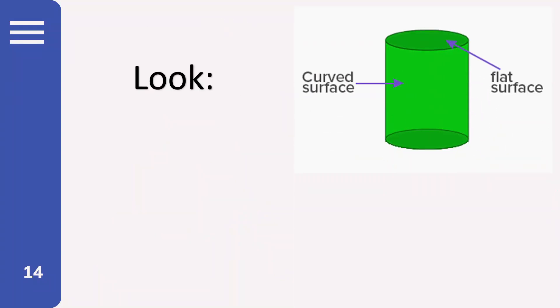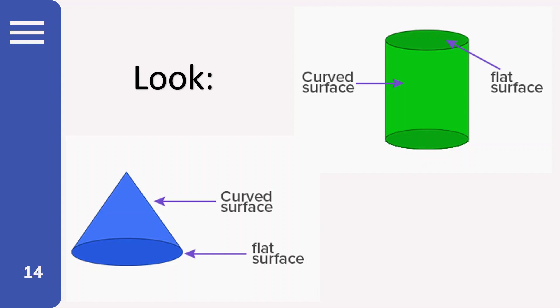Now look, a cylinder has two, the top and the bottom, flat surfaces, and one curved surface. Okay? And the cone has a flat surface at the bottom, and then one curved surface.